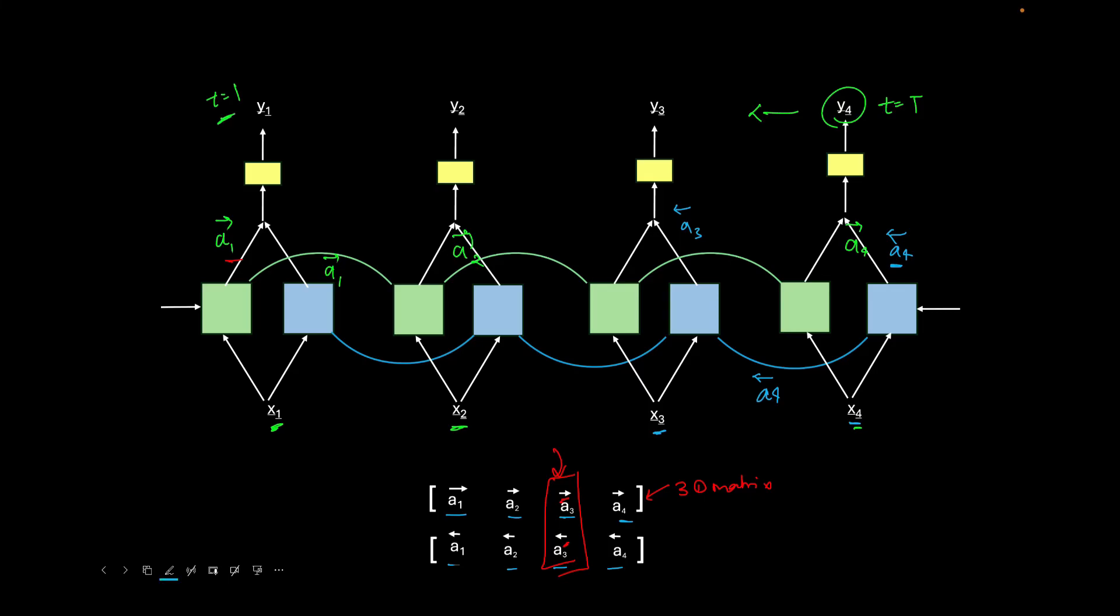So back propagation for green will move from t equal to capital T to t equal to 1, while for our blue RNN cell the back propagation will move in the reverse direction, which means that it will start with t equal to 1 as a starting point and then it will move in the forward direction till t equal to capital T. So the back propagation mechanism for both of these will be exactly same, but just the direction will be opposite.